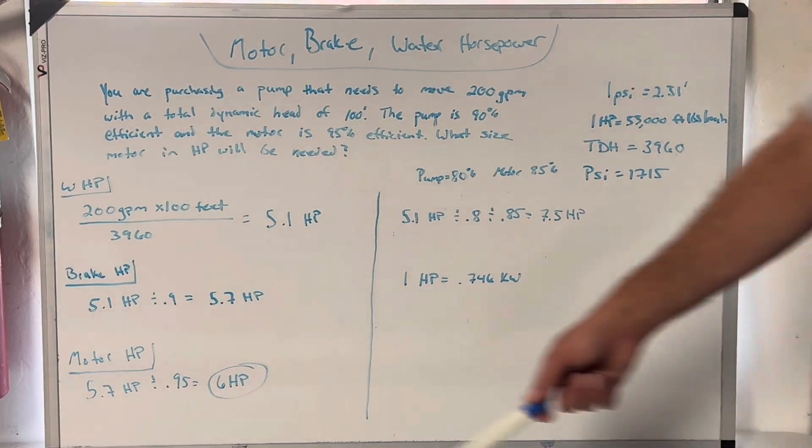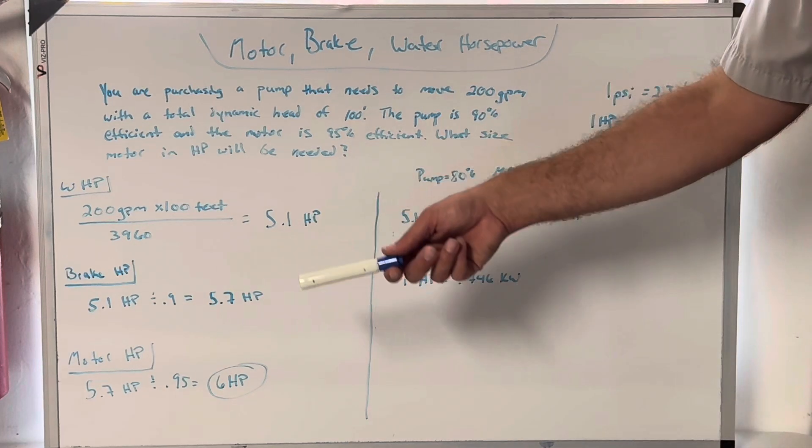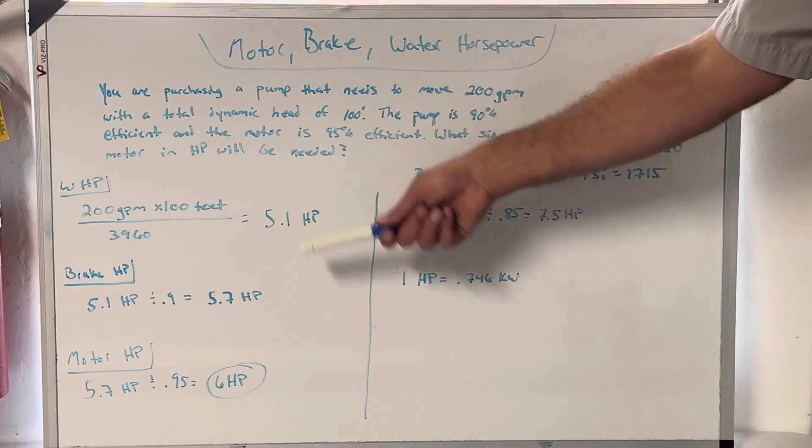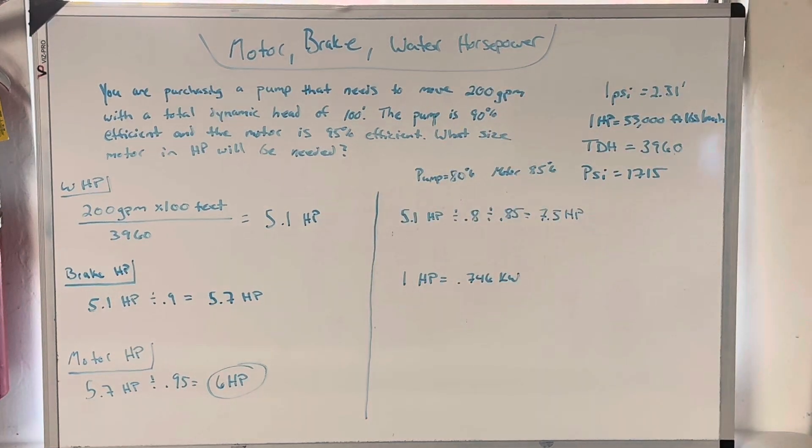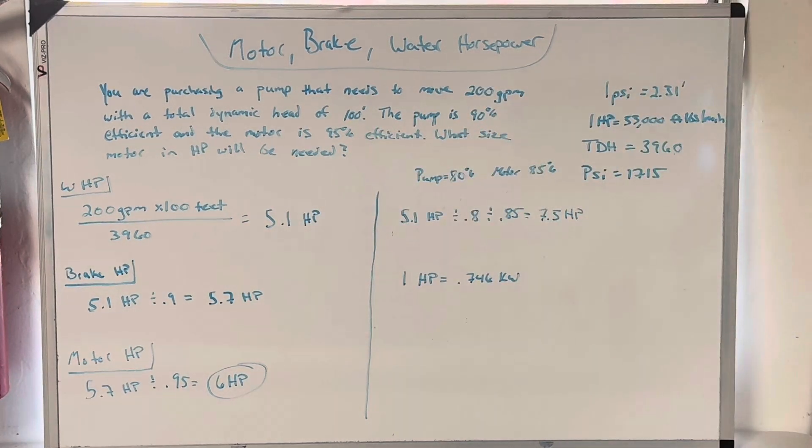And also motor horsepower is always greater than brake horsepower is always greater than water horsepower. I should say motor horsepower is greater than or equal to brake horsepower is greater than or equal to water horsepower. Because you know, you could have some 100% efficiency thing, but yeah, it's typically highest, middle, lowest.